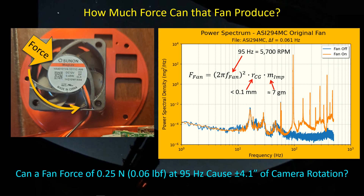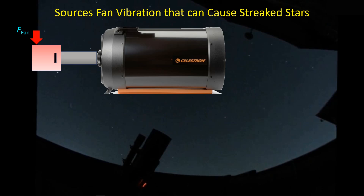Can 0.25 newtons actually cause the camera to rotate? This is a cartoon of my OTA and setup — you've got the SCT, a stack of adapters to give me the back focus of 139 millimeters, then the camera on the end of those adapters. The fan force is applied back where the fan is. The force is not a steady force pointed in one direction — it actually rotates 95 times a second, so half the time the force is pushing down and half the time it's pushing up.